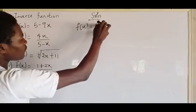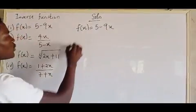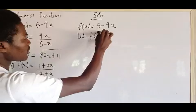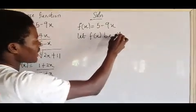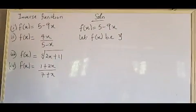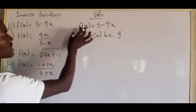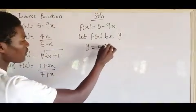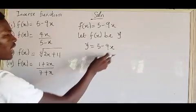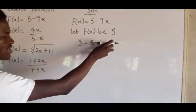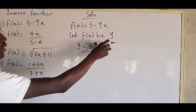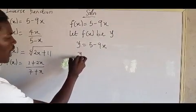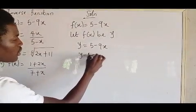F of X equals five minus nine X. What you will do is let F of X be any letter, let's say Y, so that F of X equals Y. That means Y equals five minus nine X. After that, you make X the subject of the formula. So if you are making X the subject of the formula, that will be Y minus five equals negative nine X.